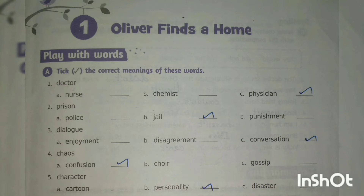Now let's go on to the fourth question. The question is 'chaos'. Option A, confusion; option B, choir; option C, gossip. The right answer is option A, confusion. Chaos means confusion.